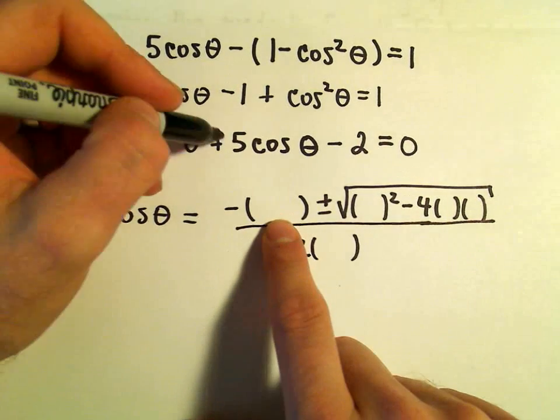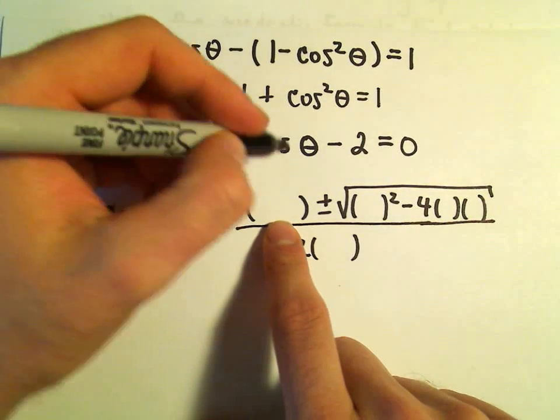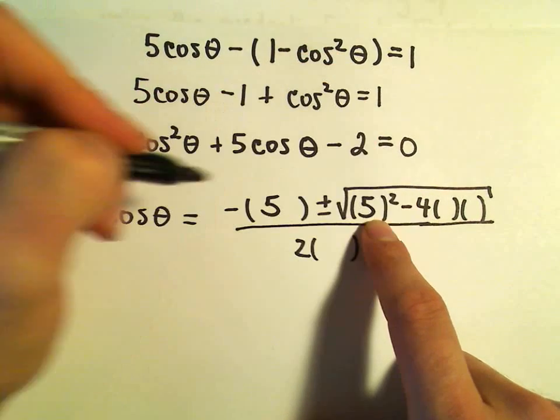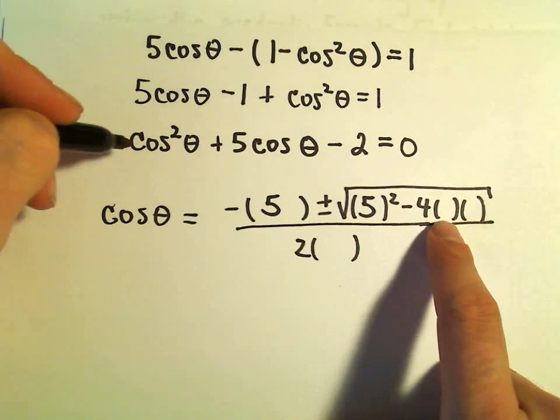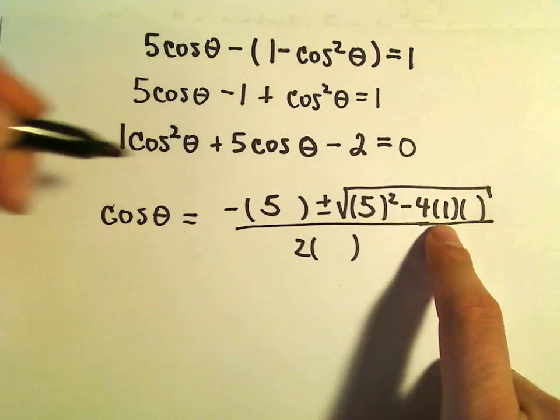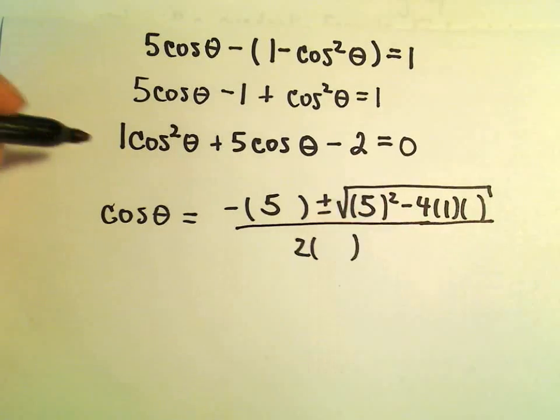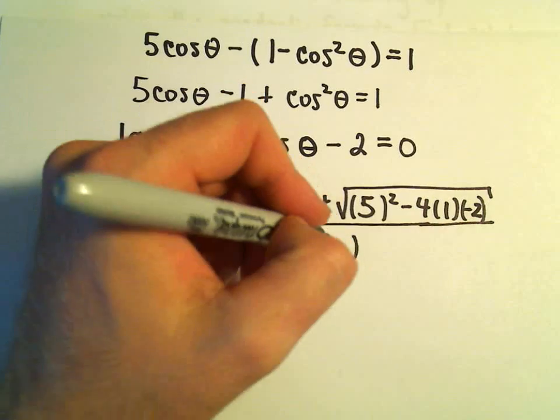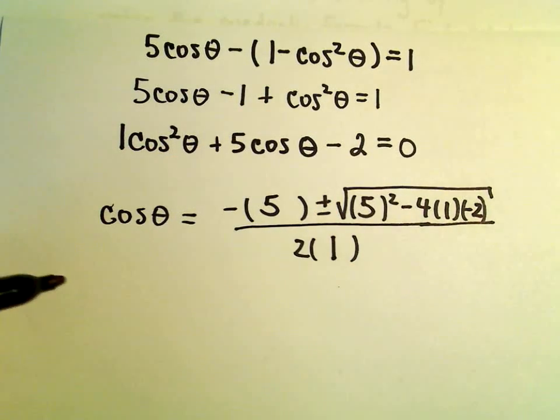We do negative b. b will be the positive 5. Then we take b squared minus 4 times a. Well, the coefficient on the cosine squared is just a 1, and then times the c value, which is going to be negative 2, all over 2 times a, which is 1.